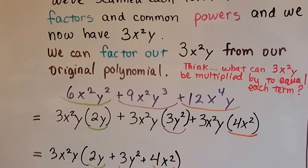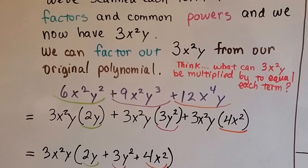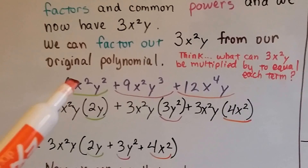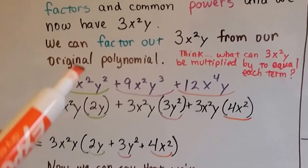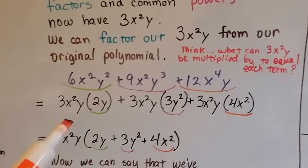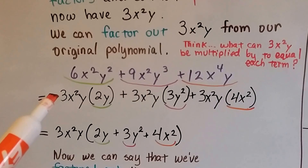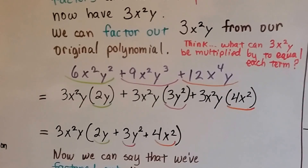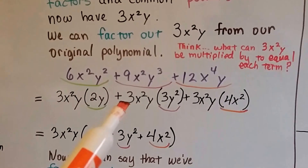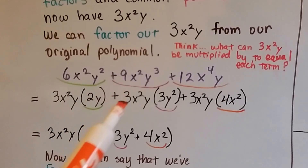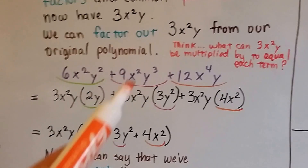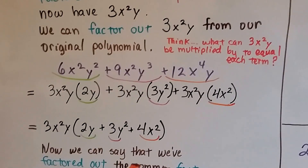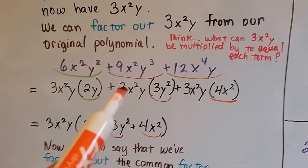We can factor out 3x squared y from our original polynomial. We think: what can 3x squared y be multiplied by to equal each of these terms? It's already got the x squared, but it's missing one of the exponents for the y, and we need a 3 times 2 to make the 6. Because we need a 2 to get to the 6, and this y needs a 1 to become a 2, we end up with 2y as what we need to multiply it by. What do we need to multiply 3x squared y to get the next term? 3 times 3, so the coefficient is 3. x squared is already there, but y is only y to the first power and we need y to the third power, so this is going to have to be y to the second power.